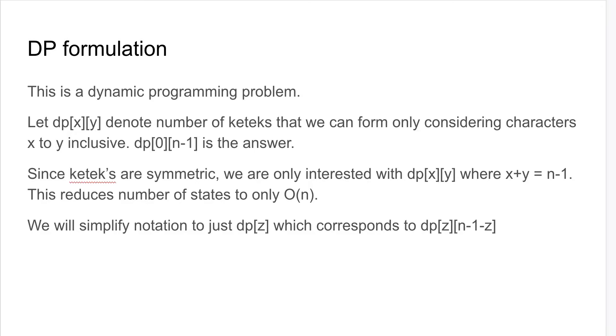One initial step is to define dp[x][y] to denote the number of kateks that you can form if you only consider characters from x to y inclusive, and dp[0][n-1] is the answer. One thing you can notice is that kateks are symmetric about the midpoint of the string. So we're really only interested in dp[x][y] where x+y equals n-1, and this reduces the number of states to only O(n).